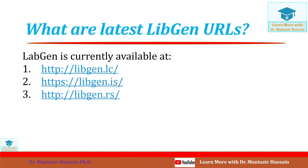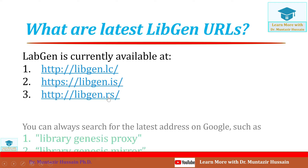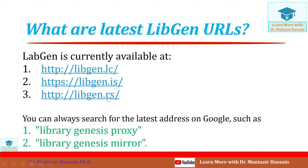These are the currently working active domains of LibGen. The first domain is libgen.lc, the second is libgen.is, and the third is libgen.rs. You can also search for active domains by typing 'Library Genesis proxy' or 'Library Genesis mirror' in your search bar, and you will find active domains at the top of the search results.